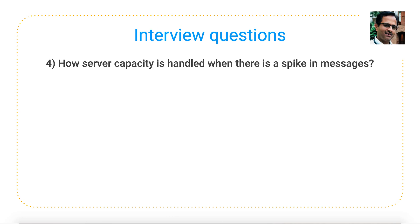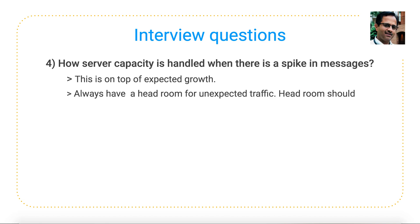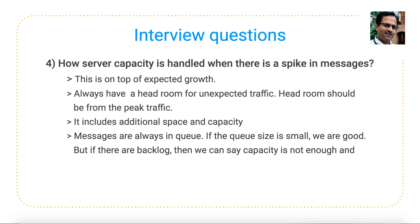The fourth question is: how is server capacity handled when there is a spike in messages? In applications like WhatsApp, traffic can spike during sports events or holidays like New Year. When planning capacity, we should provide a headroom — a buffer that can be utilized during spikes. Also, all messages are sent to a queue, which can grow very quickly or shrink rapidly. When the queue grows fast, it signals that messages are piling up, and the capacity of the queue must be increased accordingly.